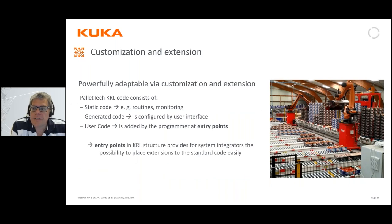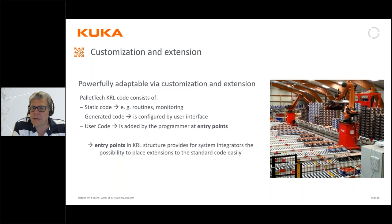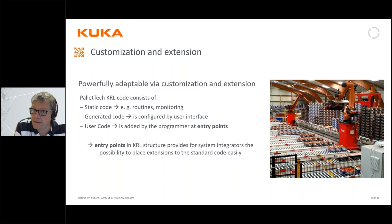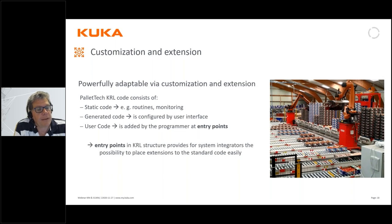Palletek automatically generates KRL — KUKA Robot Language — code which the robot uses for its palletizing application. Importantly, this code is open and unlocked, with entry points where integrators or system partners can add custom features or new functionality. For example, once the robot picks up a packet, you could insert a routine to present it to a barcode reader to register the product before palletizing. This makes it an open, flexible, and expandable system.